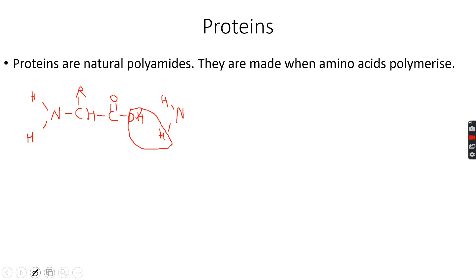The water molecule will be eliminated and an amide will be formed—the C-O-N-H amide bond. When several amino acids link together, they form proteins. Proteins are formed when amino acids polymerize, and they're also called polypeptides.